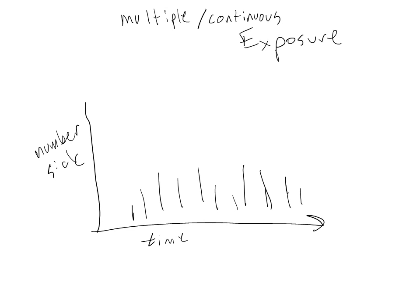The epidemic curve for a common source multiple exposure outbreak is more spread out because people are becoming exposed and subsequently sick over a more spread out period of time. Since there is no single defined exposure event for everyone that gets sick, the incubation period is difficult to determine from this epidemic curve.